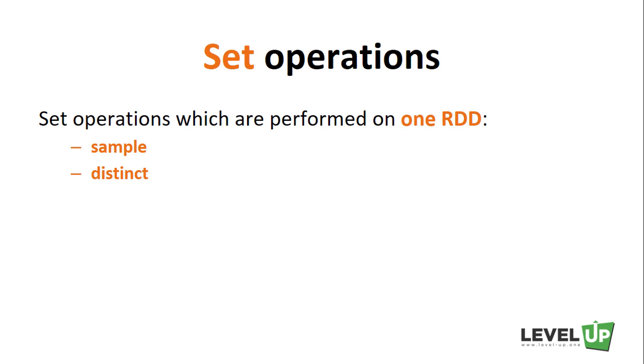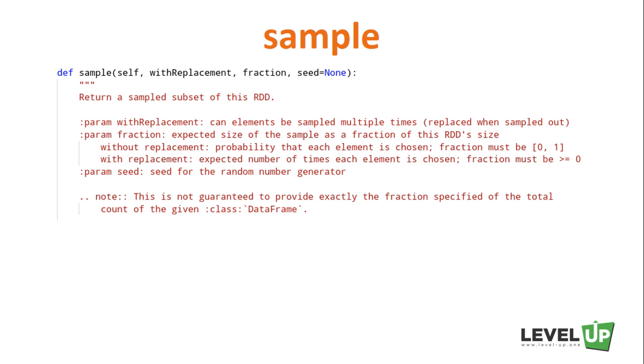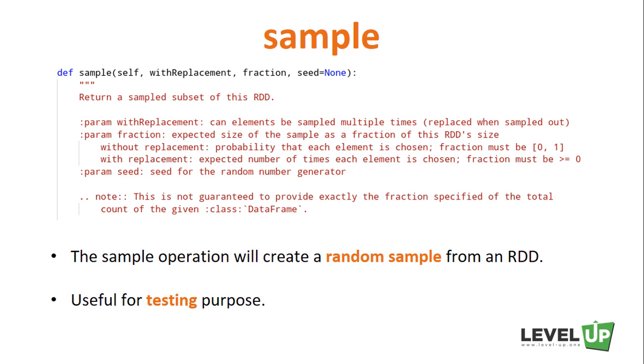The most popular ones are sample and distinct operations. The sample operation will create a random sample from an RDD. It is quite useful for testing purposes. Sometimes we want to take a little random sample of larger datasets to apply some transformations, and we want to do it on our laptop. This is when the sample operation comes in handy.